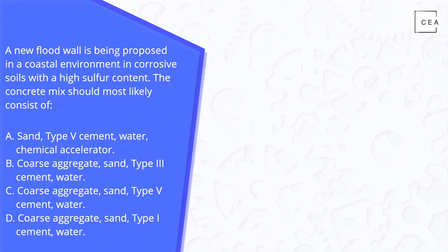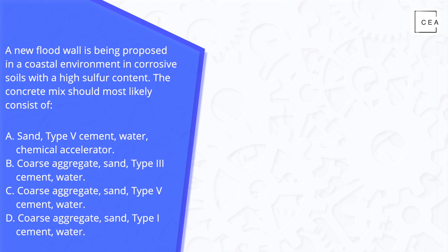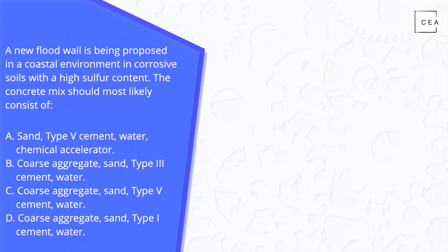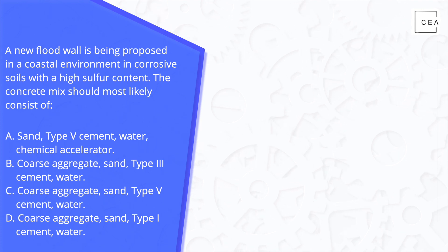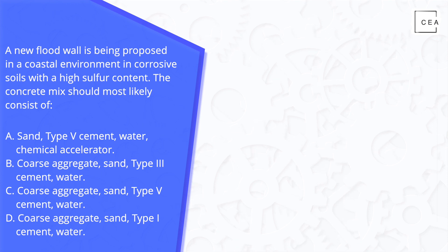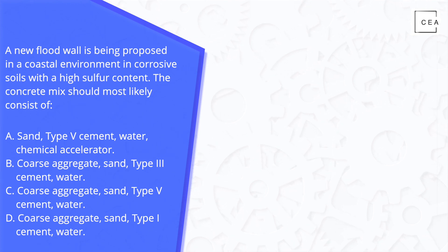A new floodwall is being proposed in a coastal environment with corrosive soils with a high sulfur content. The concrete mix should most likely consist of — and then we're given four answer choices, each with a different type of cement and different ingredients in the concrete mixture.